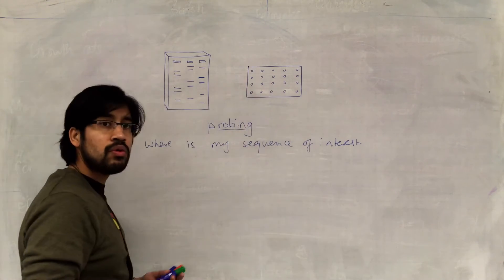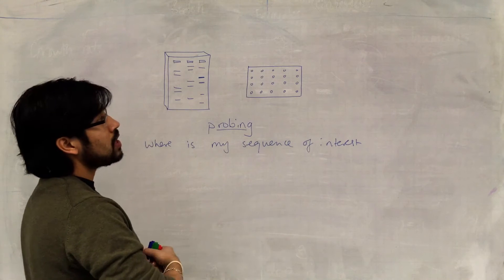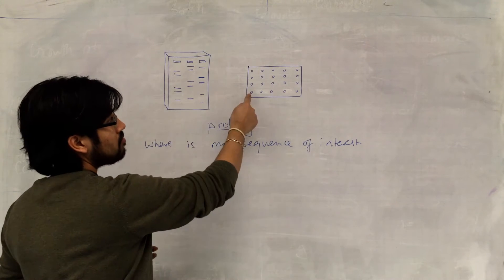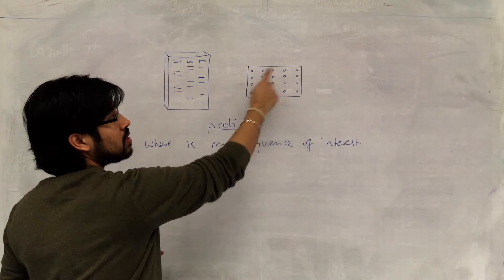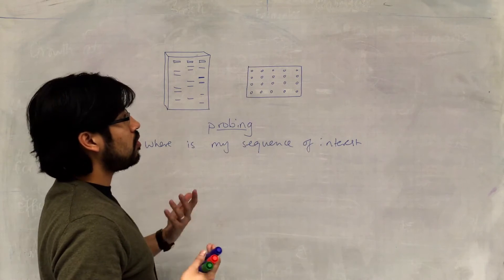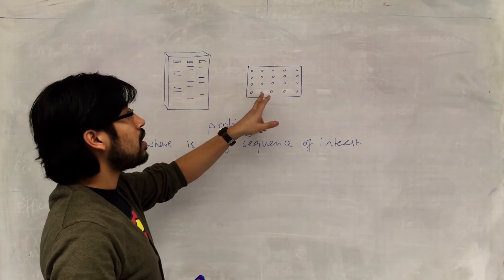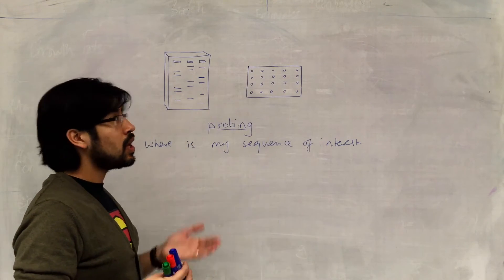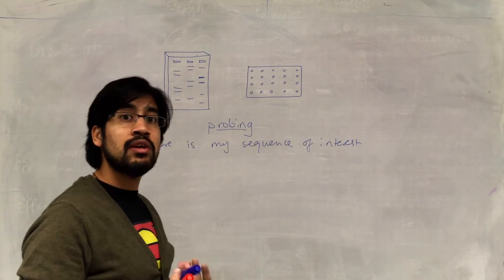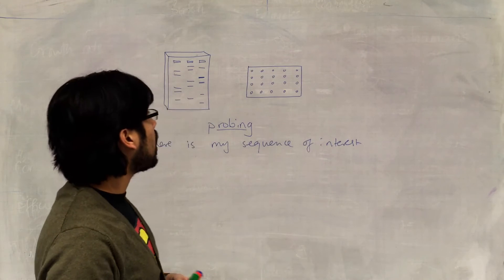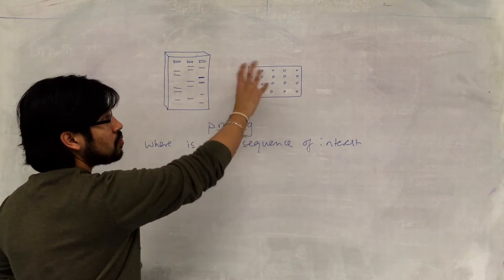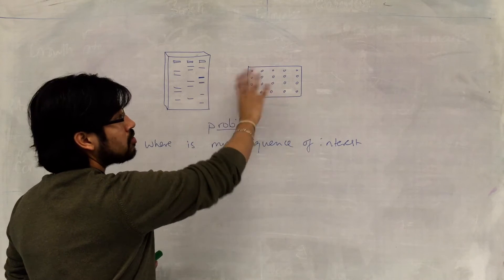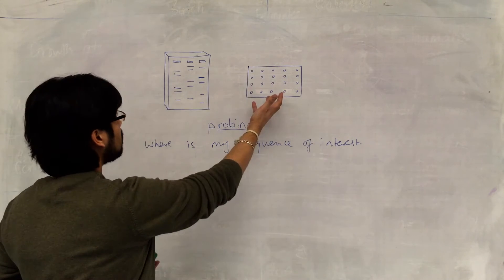Or, for example, on a microarray, I might have different patient samples here, so samples of DNA from different individuals, and I want to know which of these individuals bears the gene with a particular mutation. So I'm looking for a mutating sequence in a large number of individuals in this case.